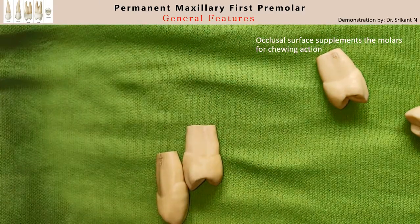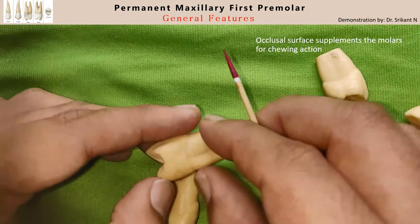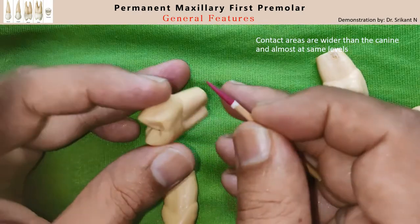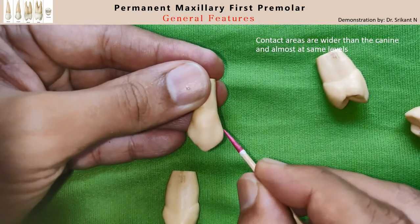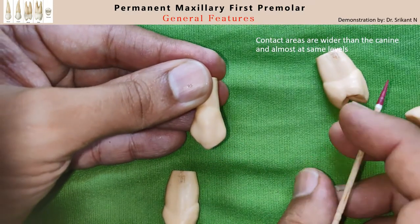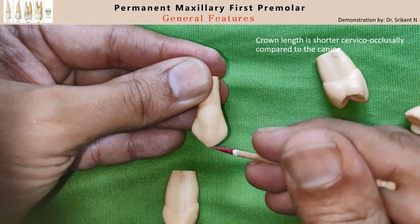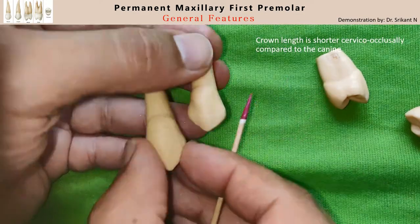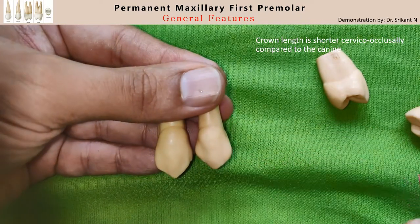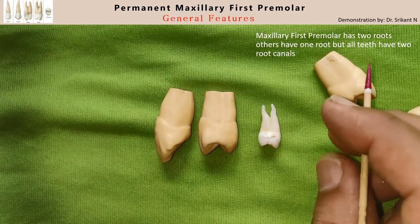Overall, the contact areas are much wider than that of the canine and are almost at the same level on both the mesial and the distal sides. The crown length is shorter cervico-occlusally compared to that of a canine, which is much longer cervico-incisally.